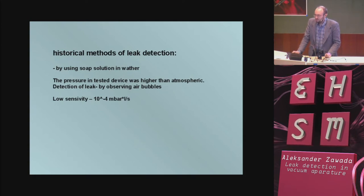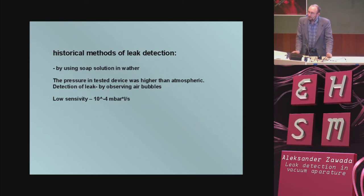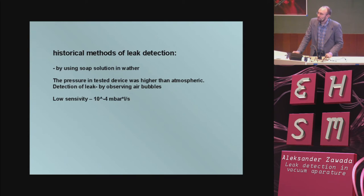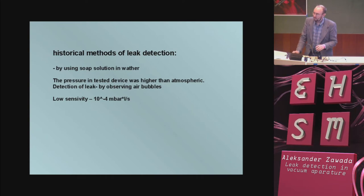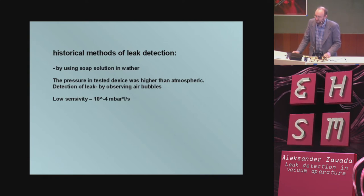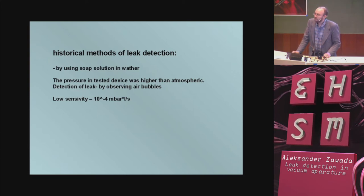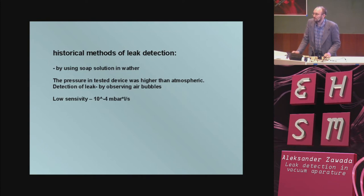About historical methods of leak detection: a very old method was using soap solution in water — you paint part of the vacuum system. Inside the vacuum system the pressure should be higher than atmospheric, and you can observe small bubbles of air from the leak place. This method has very low sensitivity: only 10⁻⁴ millibar·liter per second. It's sometimes used for pressure apparatus, but for vacuum apparatus this method is rather lost.